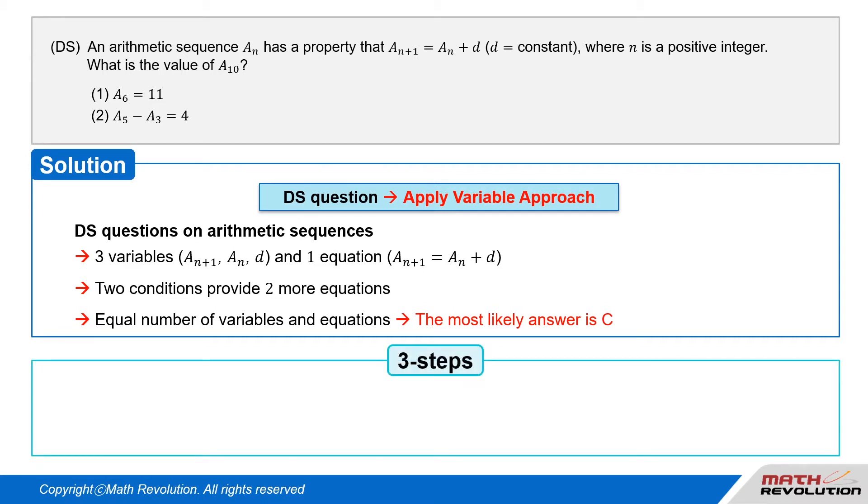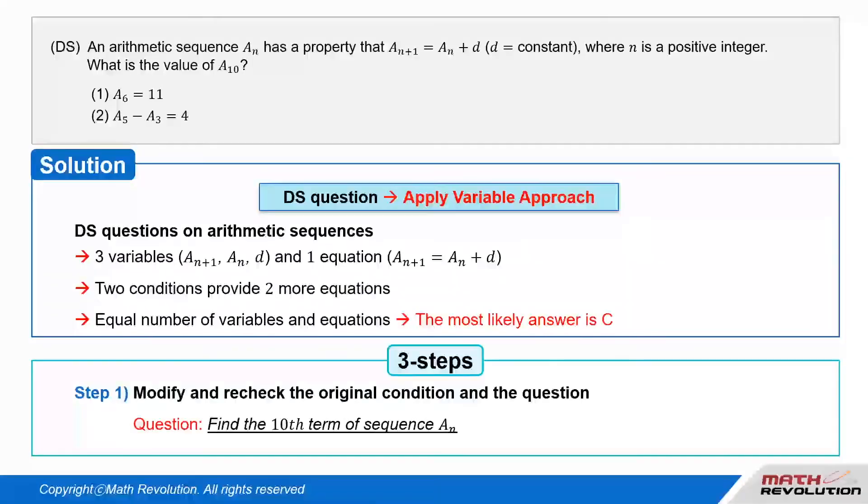Let's apply the three steps of variable approach. Let's follow the first step by modifying and rechecking the original condition and the question. We are looking for the value of the tenth term of the sequence a_n.